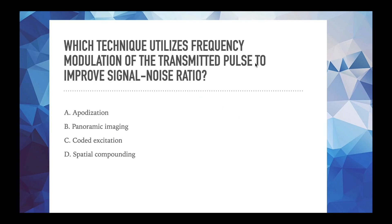All right, let's talk about our next question. Which technique utilizes frequency modulation of the transmitted pulse to improve signal to noise ratio? So we're talking about noise here. And a few of these actually have to do with noise. So this is one way that the test can get you, where there's a few answers that seem right, but there's one answer that's more correct. So let's just talk about each of these and then we'll figure out which is the best answer.